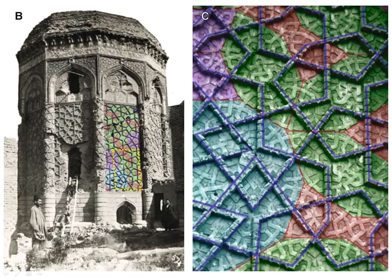Taking an image from the pages of history which shows patterns similar to quasicrystals — these similar patterns can be seen in tiled Islamic mosques at the Alhambra Palace in Spain, and also at Darb-i Imam in Iran. These kind of patterns were thought could never exist in nature.